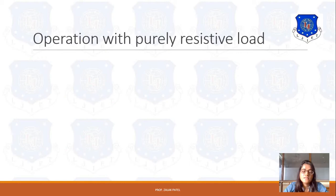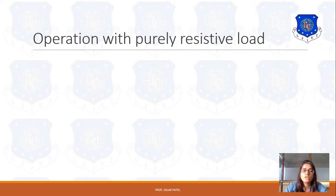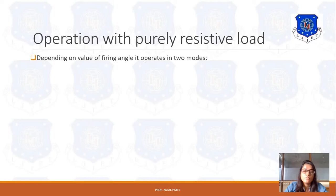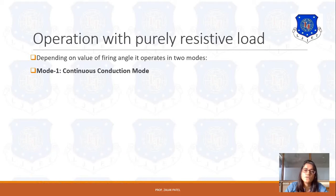Now let's take another case of full wave converter — operation with a purely resistive load. We earlier discussed operation of full converter with an inductive type of load. When the load is completely resistive, like the half wave converter, it depends on the value of alpha, the firing angle. Depending on the firing angle, it operates in two modes: Mode 1 is continuous conduction mode and Mode 2 is discontinuous conduction mode.